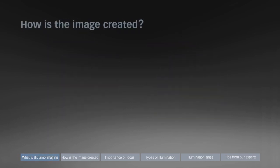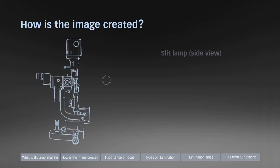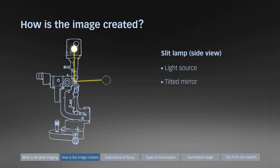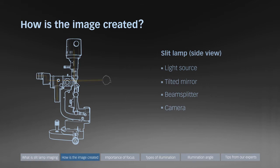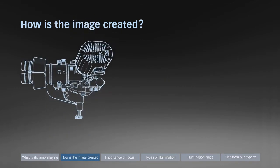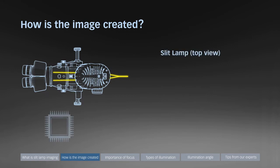How is the slit lamp image created? It all starts in the illumination head of the slit lamp. The light passes the optics, is diverted by the mirror and illuminates the patient's eye. From there it passes the optics, is divided by the beam splitter and reaches the camera sensor and the examiner's eyes. The camera captures the image of only one light path. Always keep in mind on which side your camera captures the images.